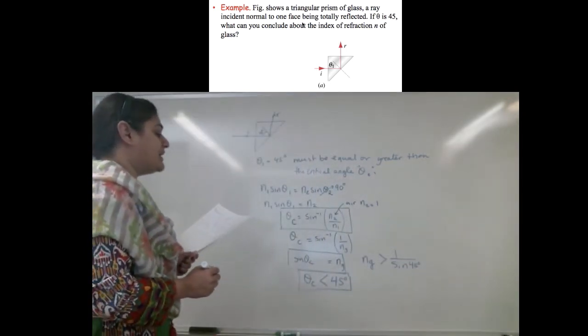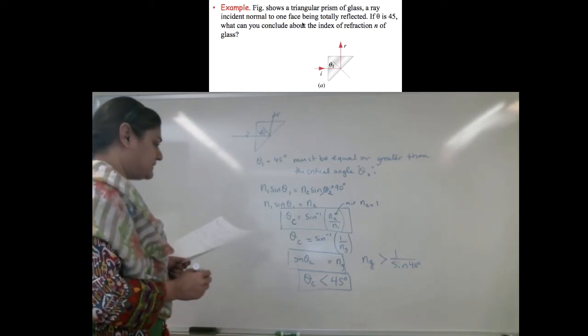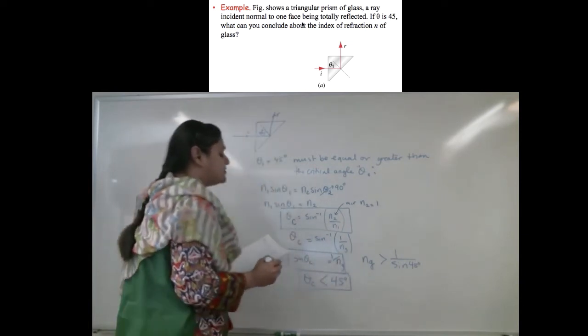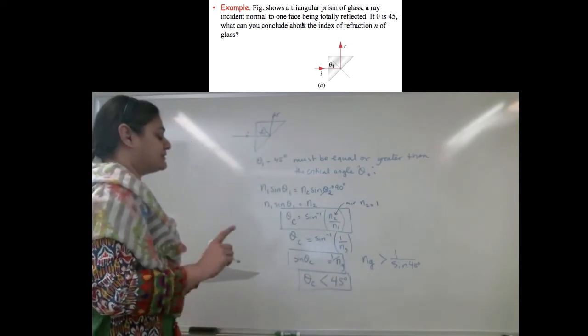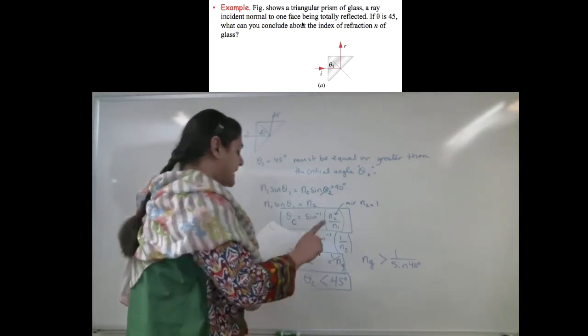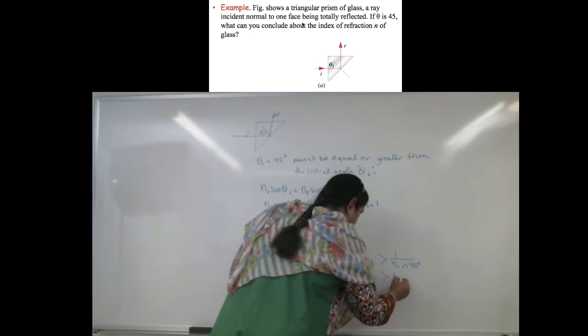And 1 over sine of 45 degrees—oops! I made a mess. This should be 1 over Ng. Sorry. That should be 1 over Ng. That means Ng must be greater than 1.41.